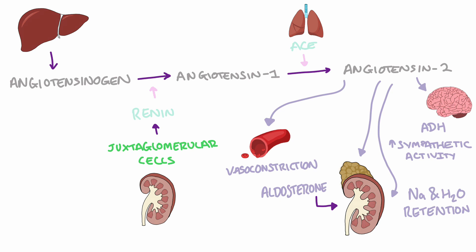The renin-angiotensin-aldosterone system runs via negative feedback. It becomes activated initially due to a low sodium concentration inside the distal convoluted tubule, which triggers the activation of macula densa cells, which then stimulates the release of renin from juxtaglomerular cells. After successfully restoring sodium levels in the distal convoluted tubule through increases in blood pressure and blood volume, the macula densa cells are no longer activated and therefore renin is no longer released from the juxtaglomerular cells.